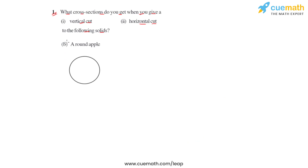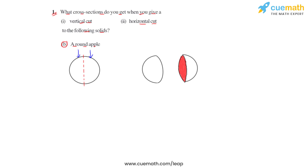The next solid is a round apple, represented by a spherical ball. If this is cut vertically along this line, the round apple is divided into two parts, and the cross section gives us a circle.